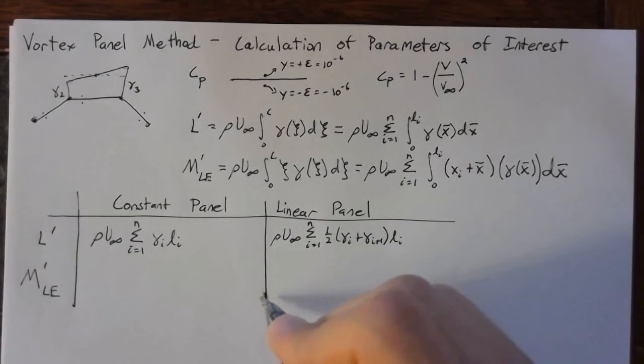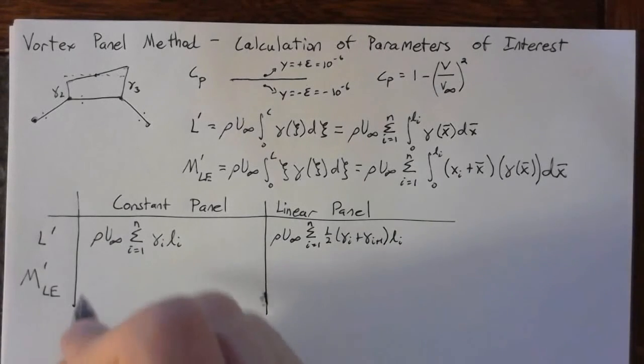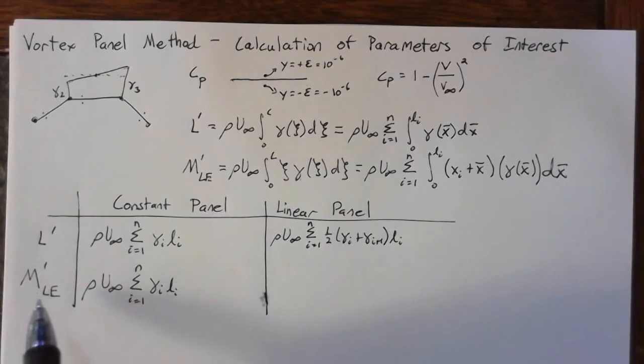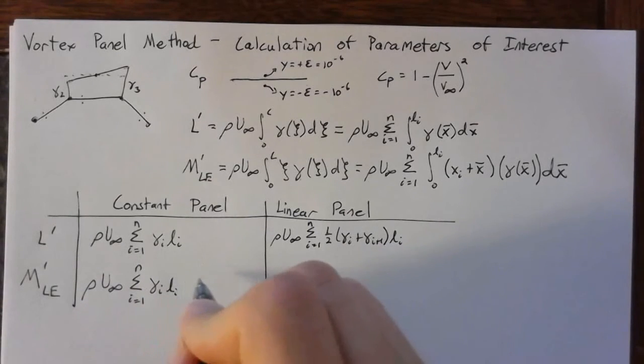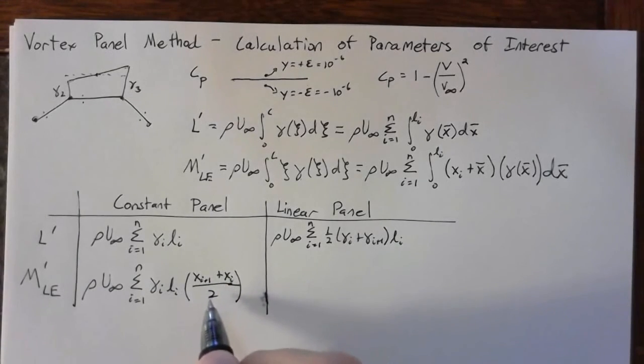And then for the moment, things get just a little bit more complicated. So for the constant panel, things stay pretty simple. And we end up with a gamma i times L of i. And then for the moment, we need a moment arm. And so for the constant panel, that moment arm is going to be x i plus 1 plus x sub i over 2. So this right here is exactly the midpoint of the panel.